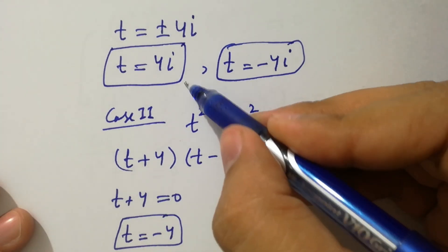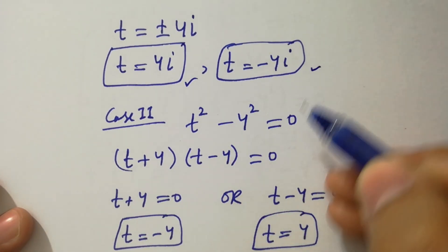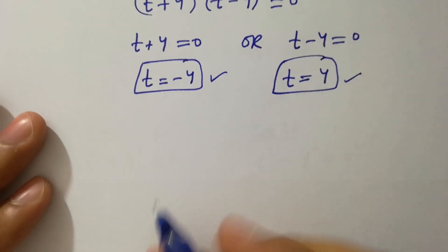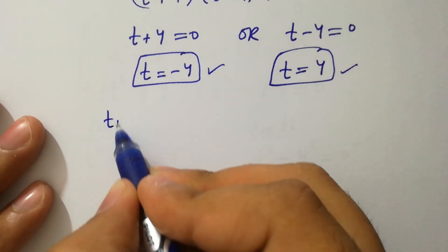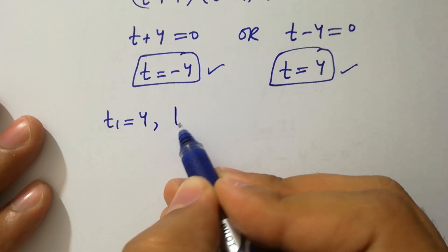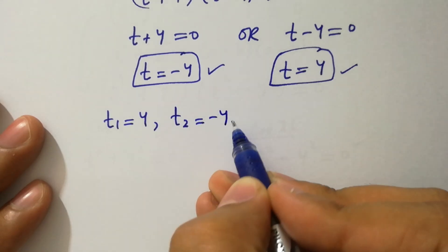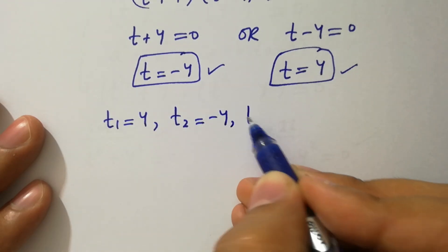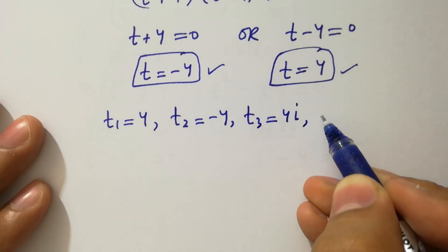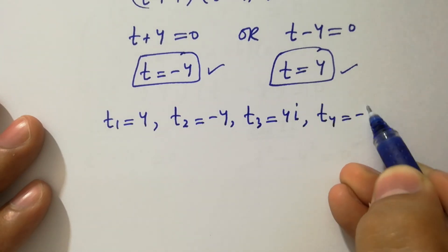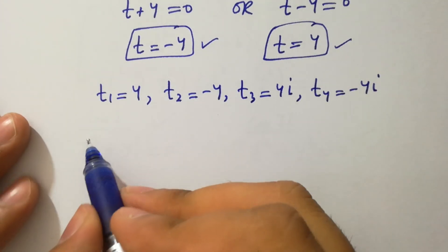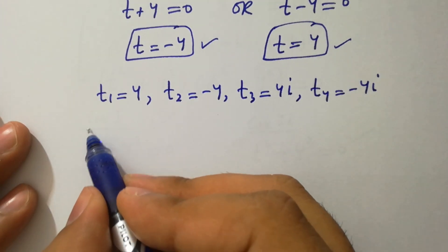We have 4 solutions: t₁ equals 4, t₂ equals minus 4, t₃ equals 4i, and t₄ equals minus 4i. In the next step, I am going to verify these solutions.